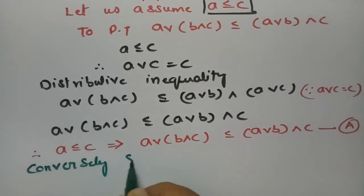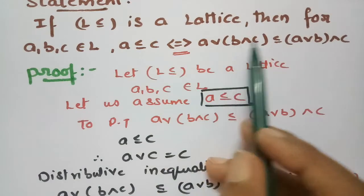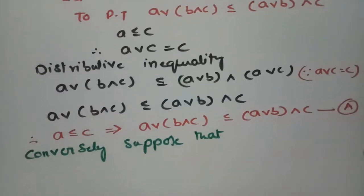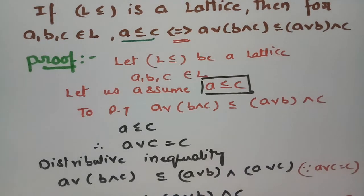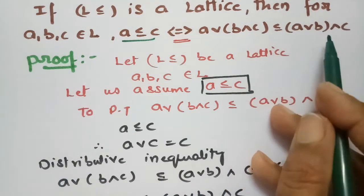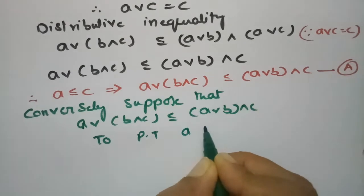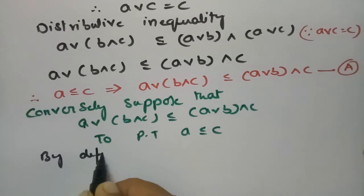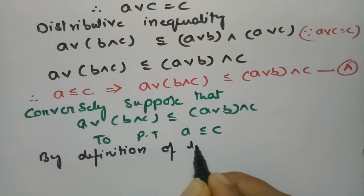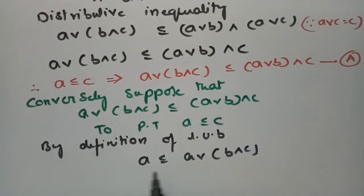Now conversely, we have to suppose the other direction. Conversely, suppose that we assume the inequality A∨(B∧C) ≤ (A∨B)∧C, and we have to show A ≤ C. That is also very simple. By definition of least upper bound, A ≤ A∨(B∧C).